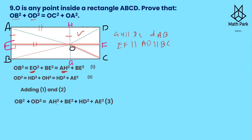Now we target OC² and OA². For OC², in triangle OGC, OC² = CG² + OG². Now CG = HD (opposite sides of rectangle) so CG² = HD², and OG = BE so OG² = BE². This is equation four. So OC² = HD² + BE².